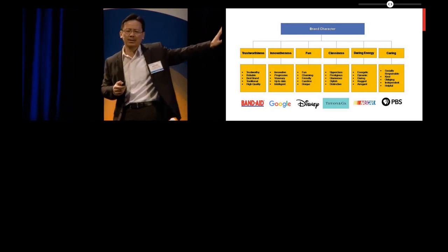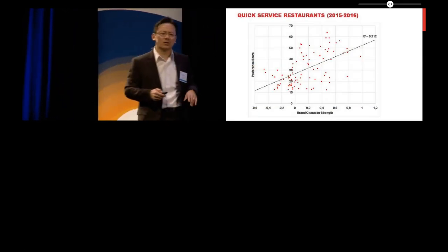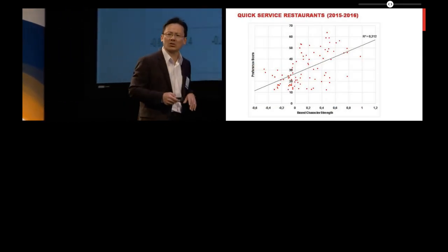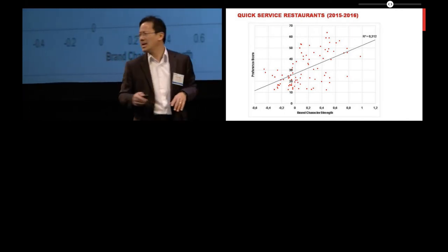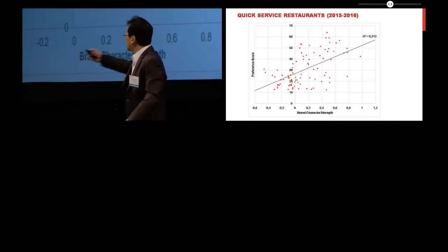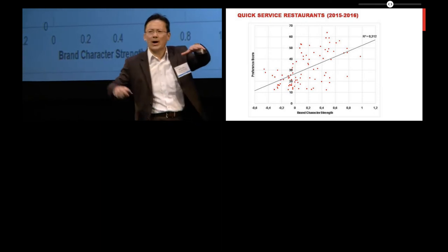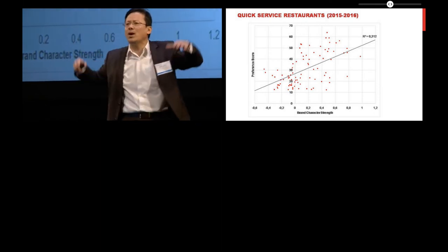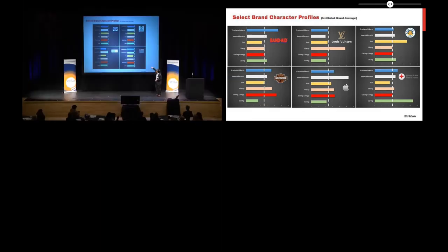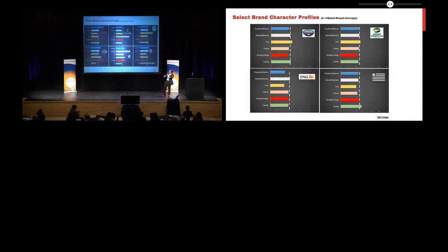So here are our different profiles. Let me show you some of the results in terms of brand character. Quick service restaurants. Let's see on the x-axis is a measure of how high you score on brand character. So basically, how high your bars would be across the board. Here are brands that have relatively low bars. There are brands that sort of stand out here.